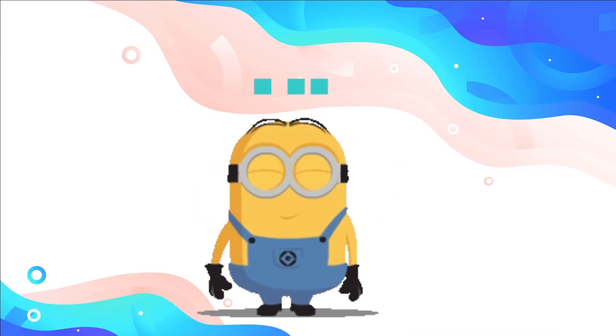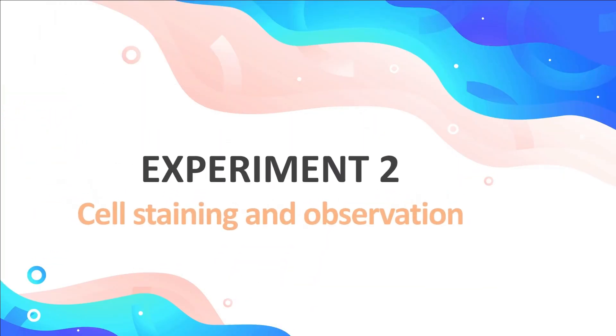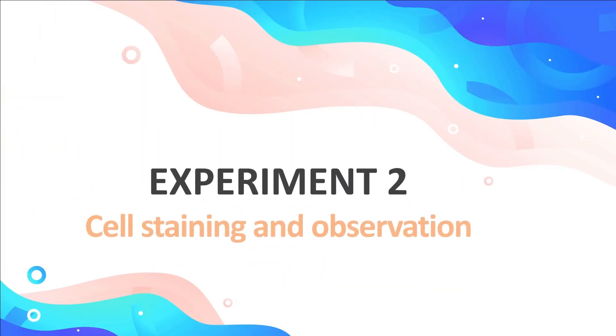Hi everyone! Welcome to Acid Biology YouTube channel. Today, we are going to watch a demo video on experiment 2, cell staining and observation. In this experiment, we will observe 3 different types of cells, which include plant cells, animal cells and bacteria.